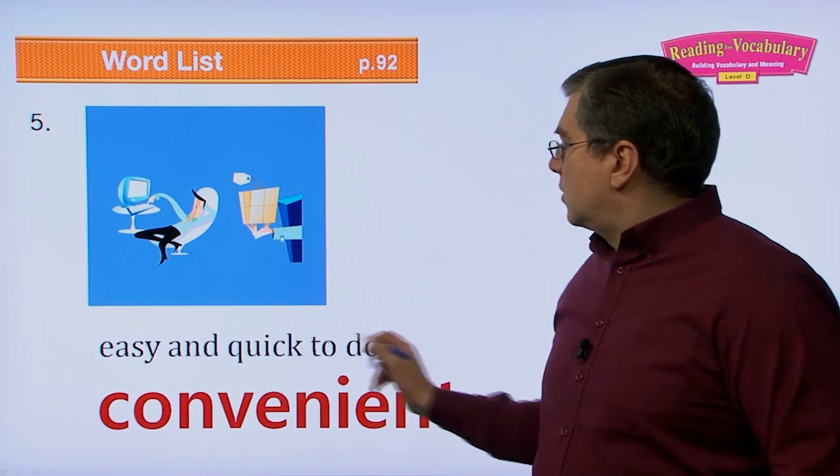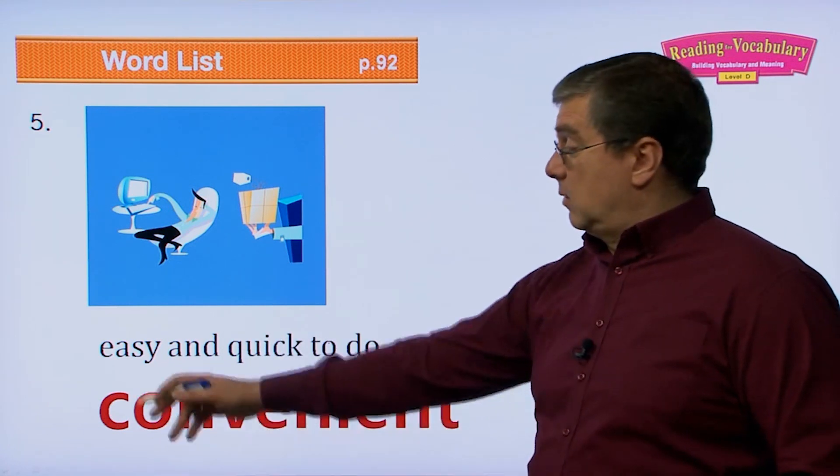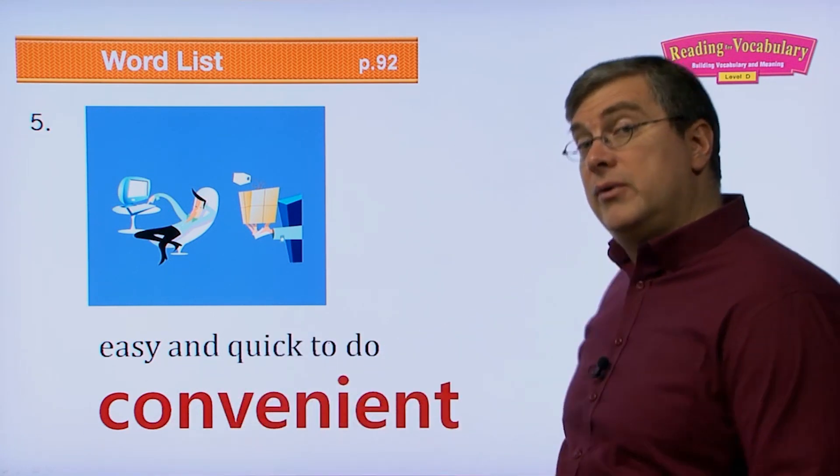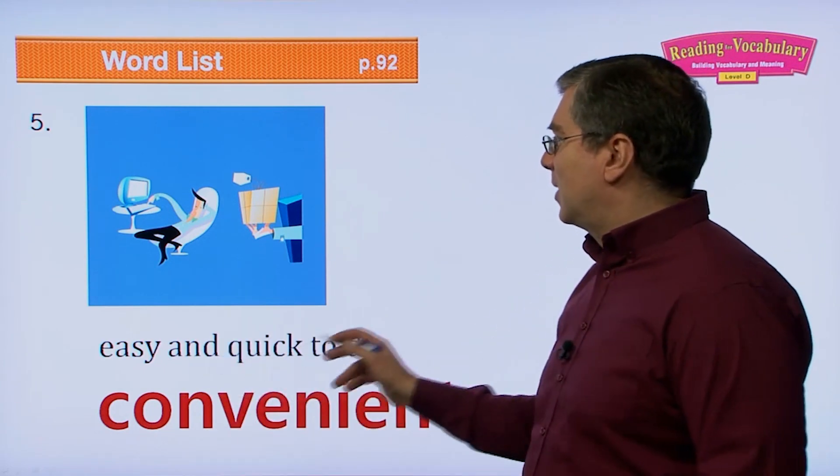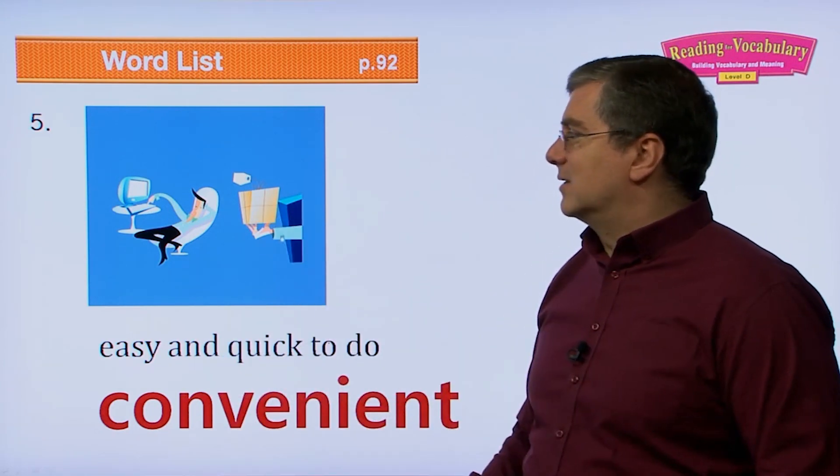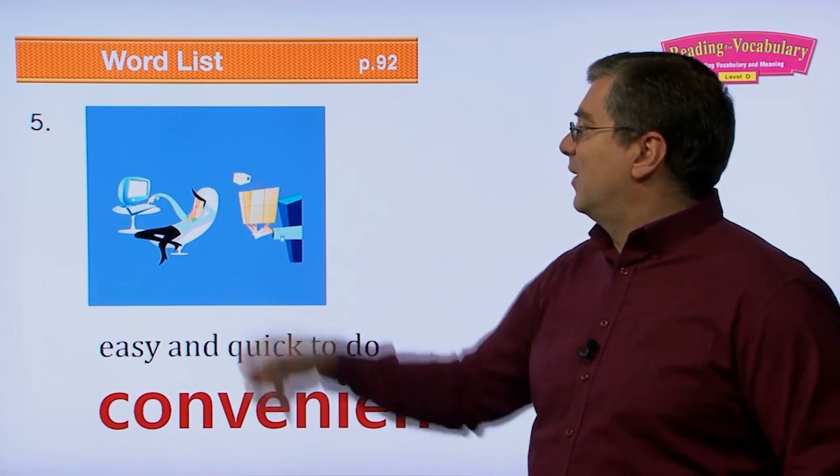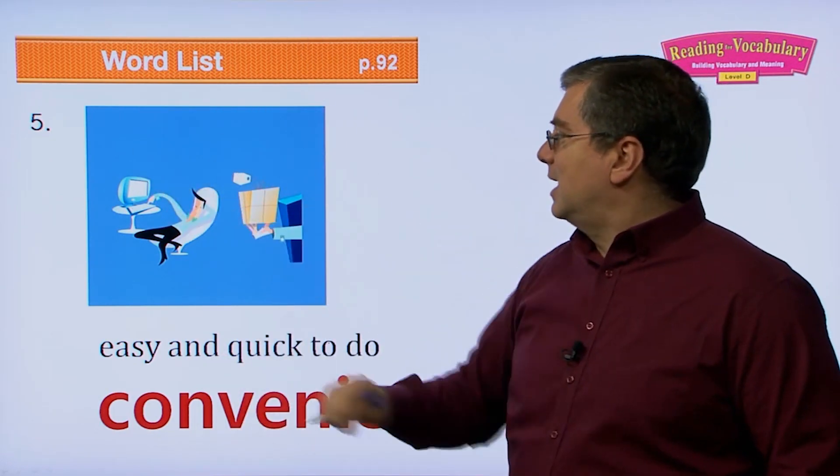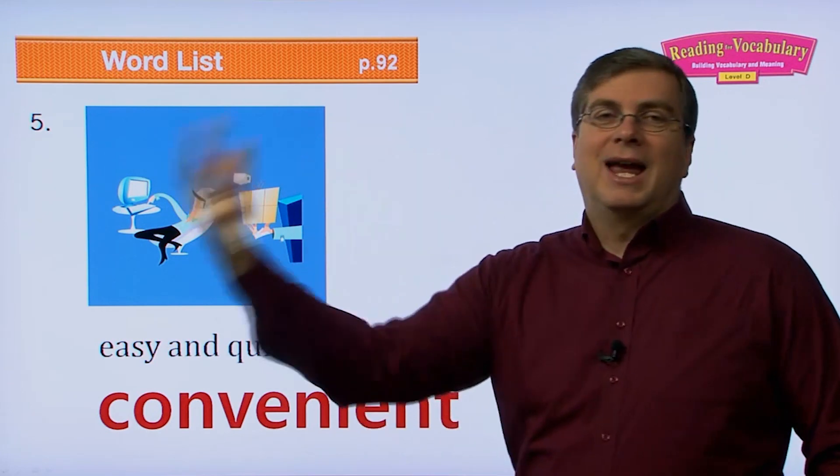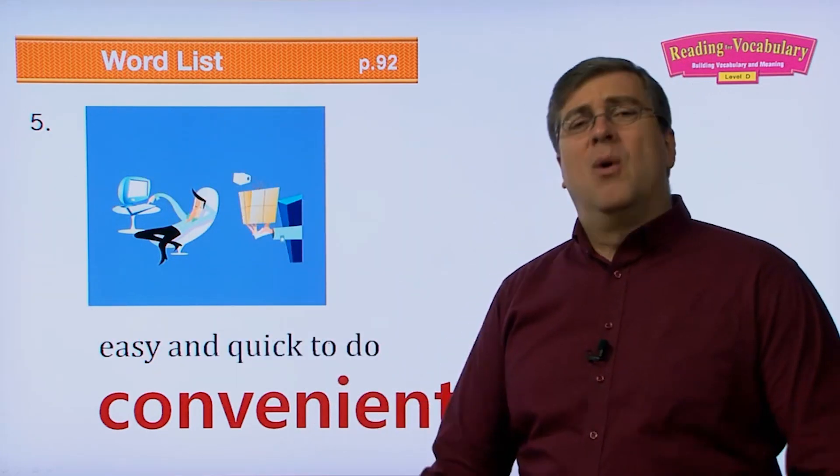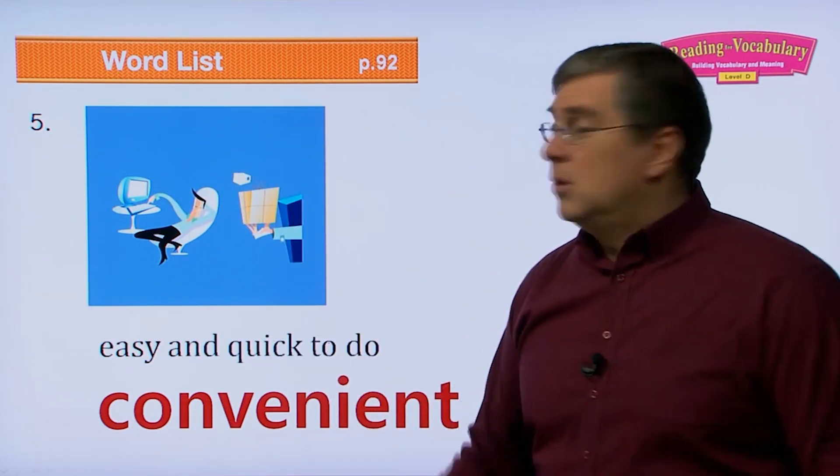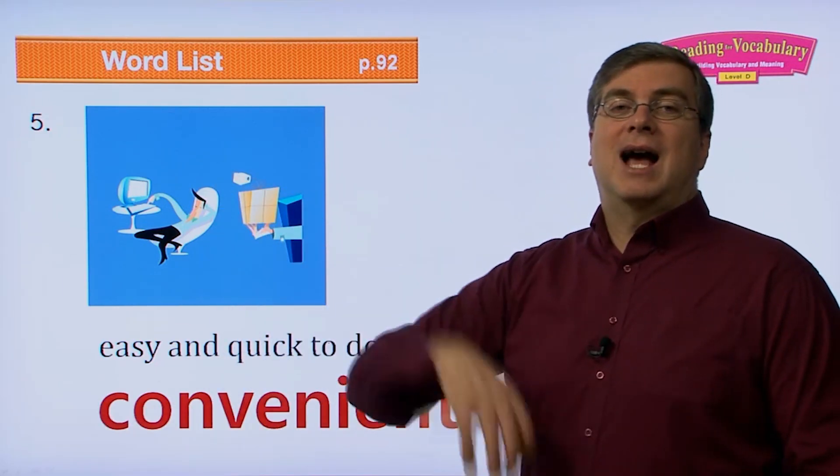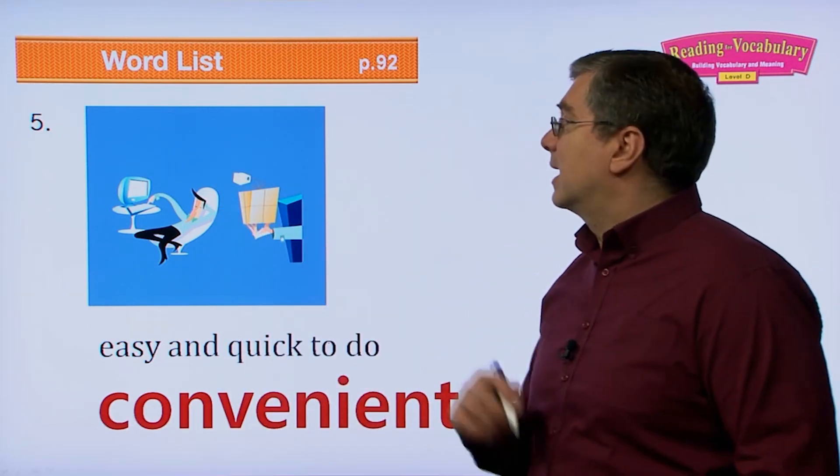Five. Easy and quick to do. Well, it's very convenient. That word just kind of slid right on in there very conveniently. It was easy and quick to do. It's convenient. Modern life is very convenient, isn't it? We just hit some keys on our keyboard and somebody comes to our door and gives us a package. How convenient is that? We don't even have to leave our house anymore to get items from the store.